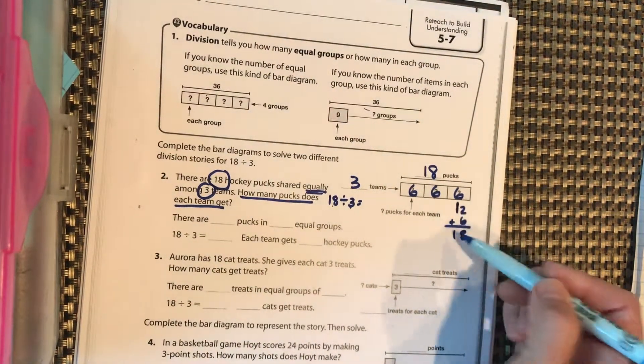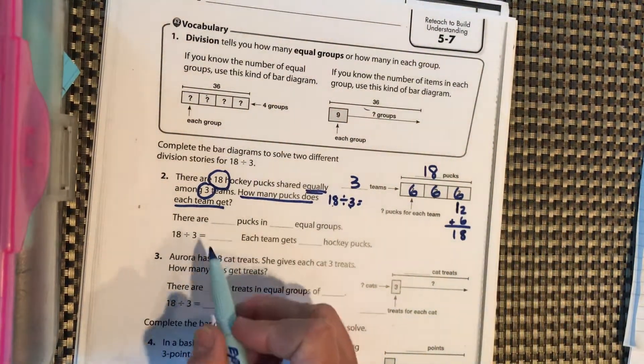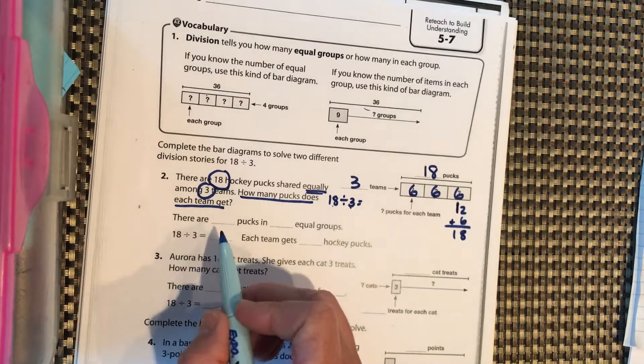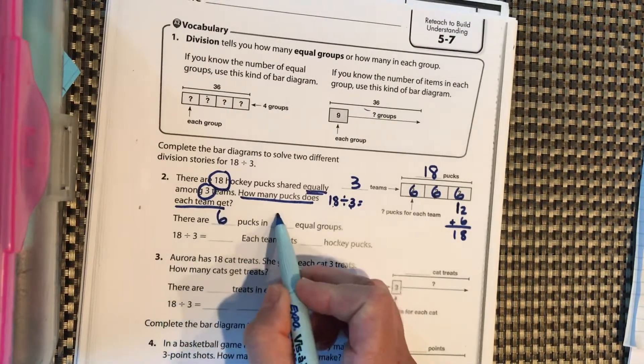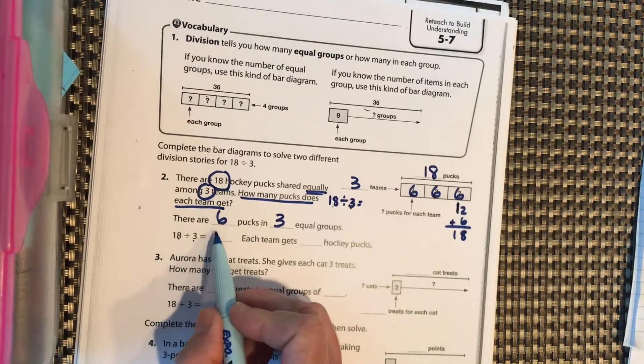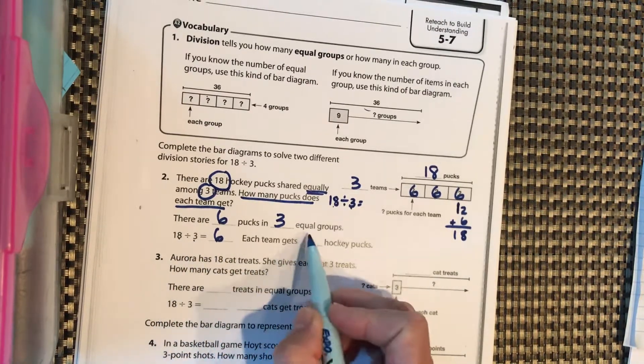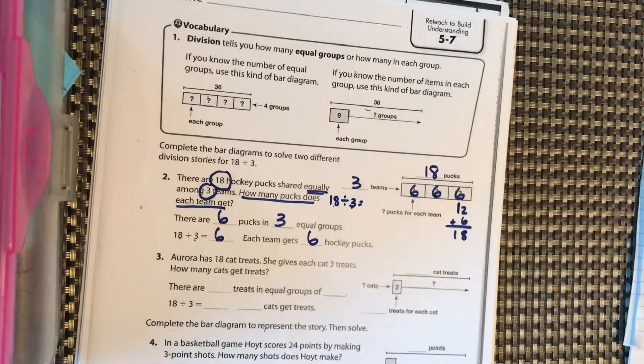Two plus six is eight. No need to carry. And one, bring it down. So there are six pucks in three equal groups. 18 divided by three equals six. Each team gets six hockey pucks.